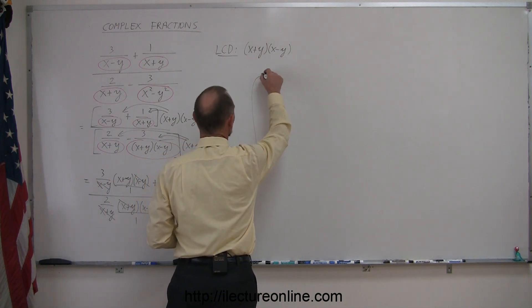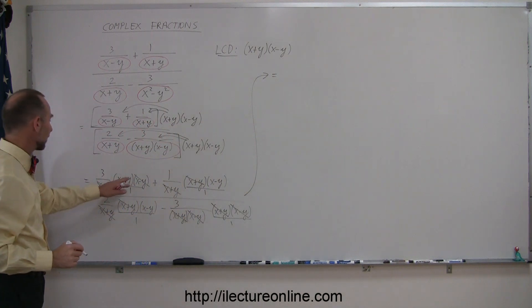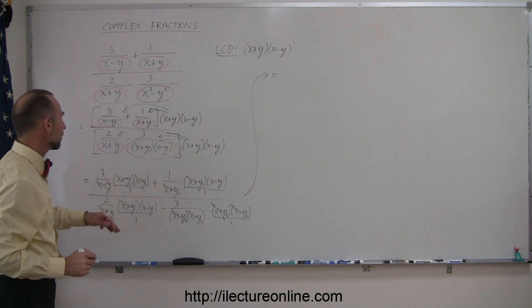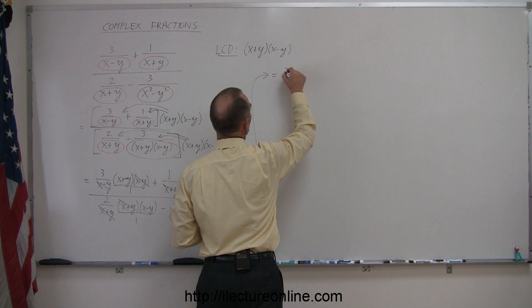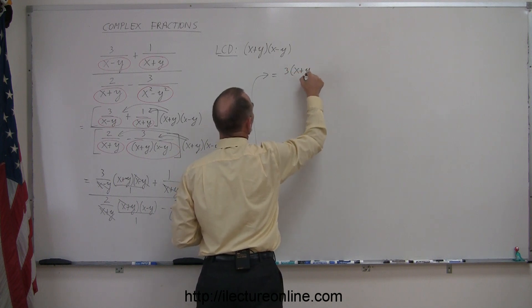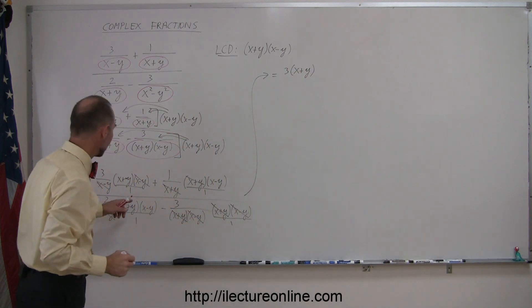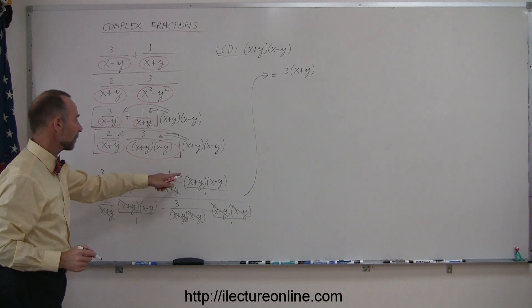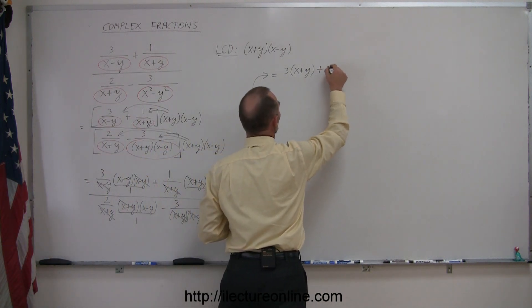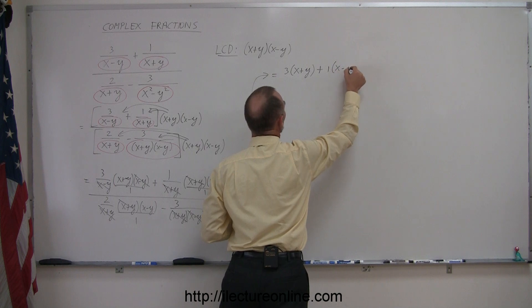Come up here, because we have a little bit more space. So if that's canceled out with that, we have left a 3 times x plus y. And then here we have left a 1 times x minus y, so plus 1 times x minus y.